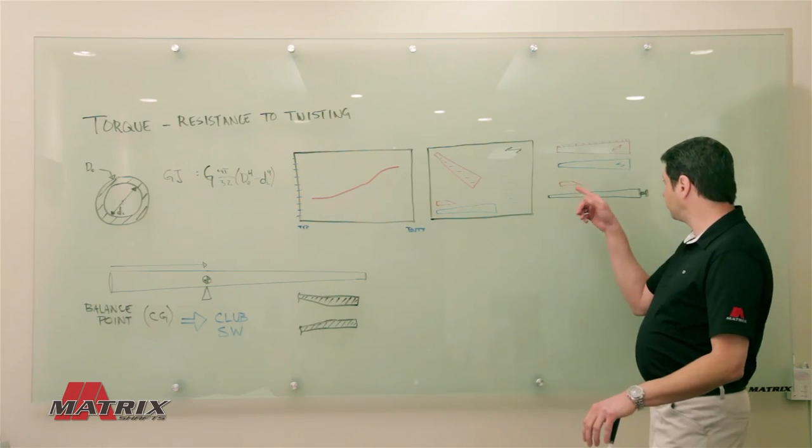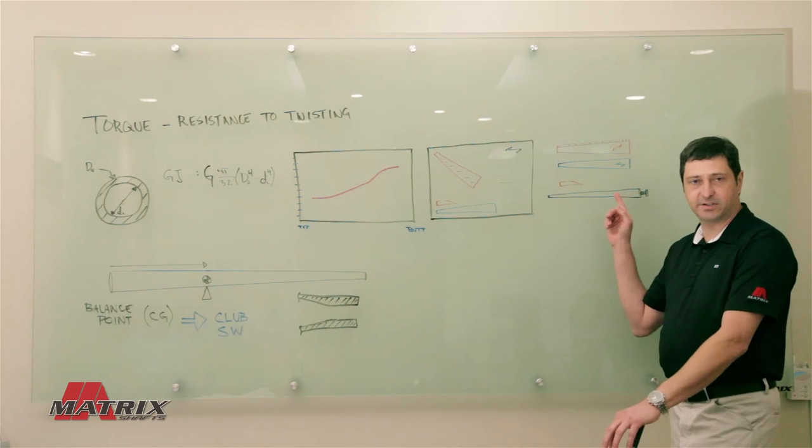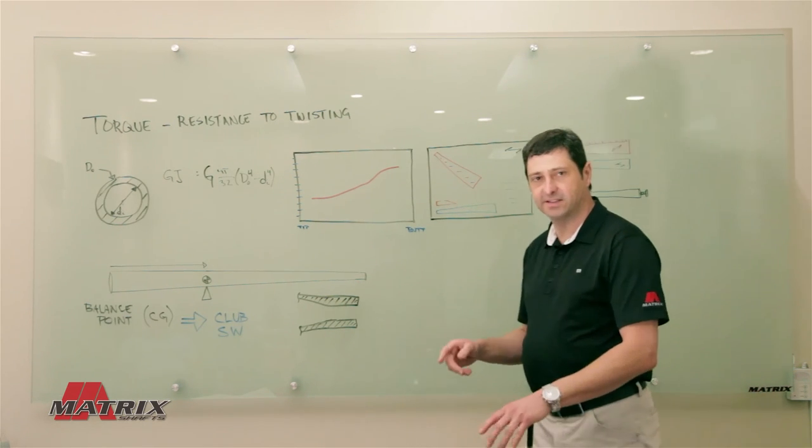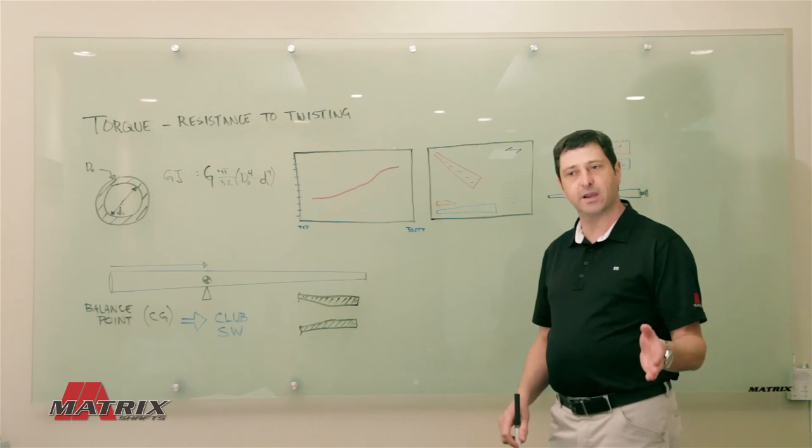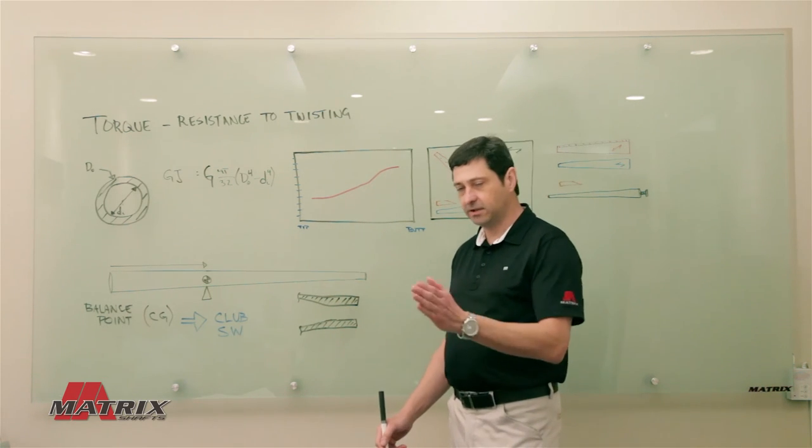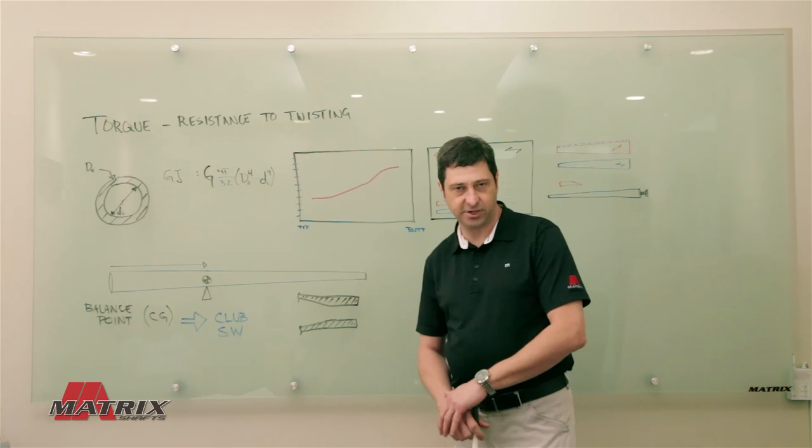By manipulating the plies and the materials we use, we can get the same stiffness and torque for a 50 gram shaft, a 60 gram shaft, 70 gram shaft, 80 gram shaft.